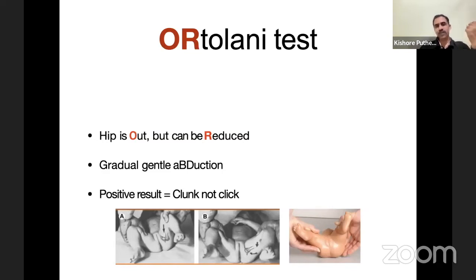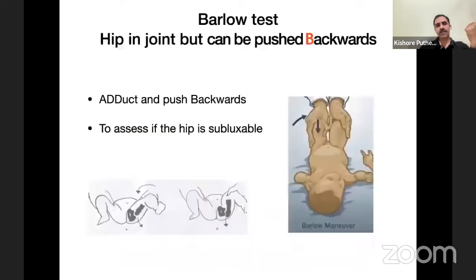In the Ortolani test the hip is out to begin with, and you are trying to reduce it by gradually abducting the hip. A positive result means a clunk, not a click. The Barlow test means the hip is in the joint to begin with but can be pushed backwards — you adduct and push backwards to assess if the hip is subluxatable.